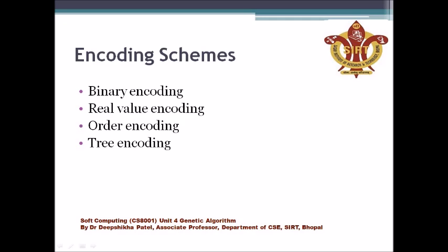There are basically four kinds of encoding schemes used in genetic algorithms. The first one is binary encoding, the second is real value encoding, the third is order encoding or permutation encoding, and the fourth is tree encoding. These are the four types of encoding schemes generally used in genetic algorithms.